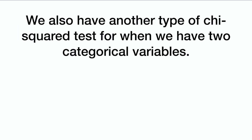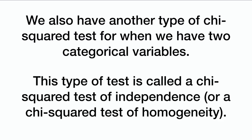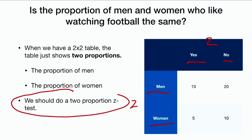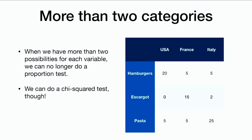We also have another type of chi-squared test for when we have two categorical variables, called a chi-squared test of independence or a chi-squared test of homogeneity. We may have seen questions like this with a 2x2 table, asking: is the proportion of men and women who like watching football the same? If we only have two categories and two answers, we could do a two-proportion z-test. But if we have more than two categories, we can no longer do a proportion test — we do a chi-squared test instead.